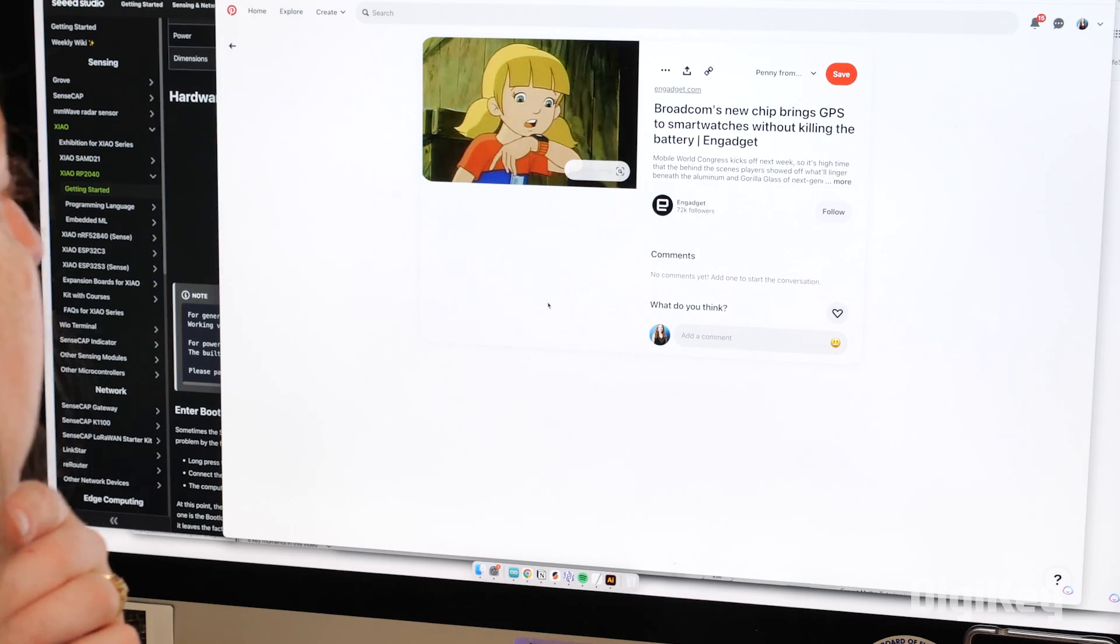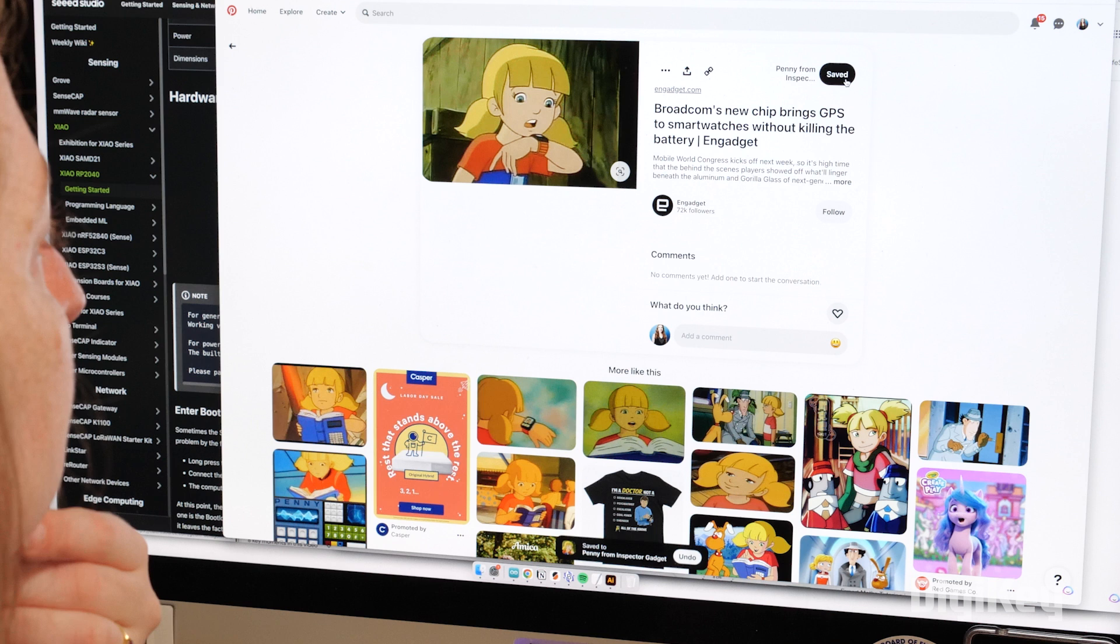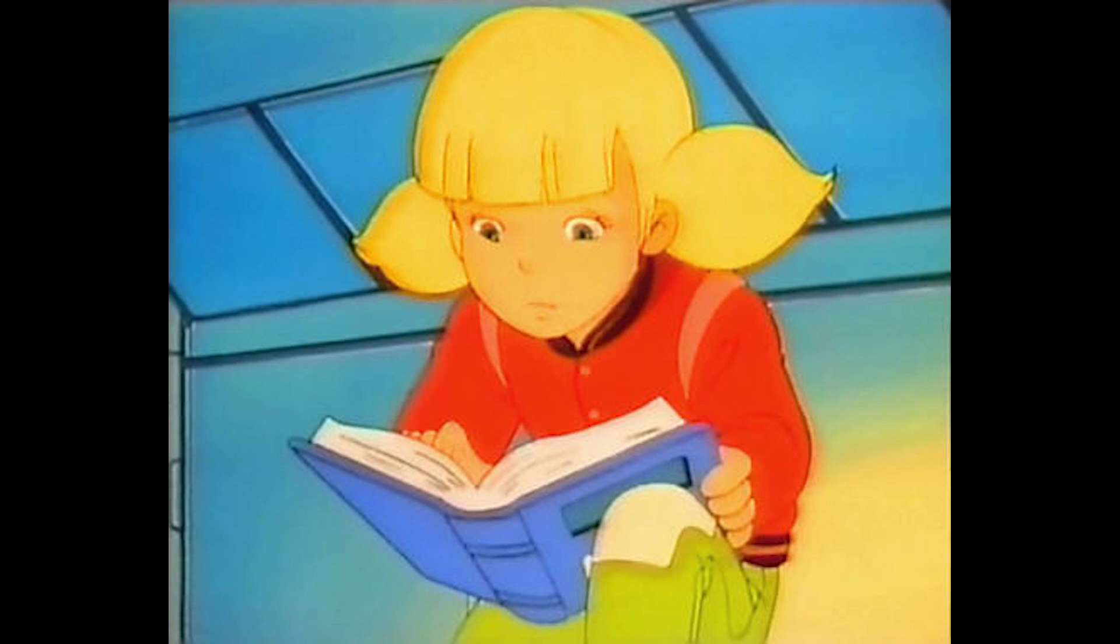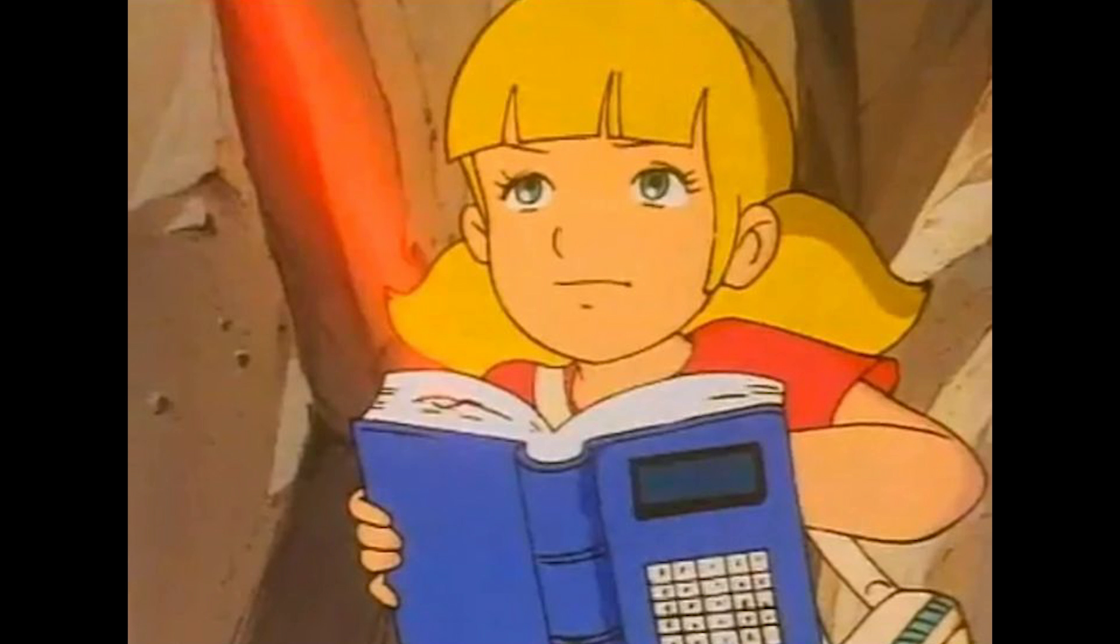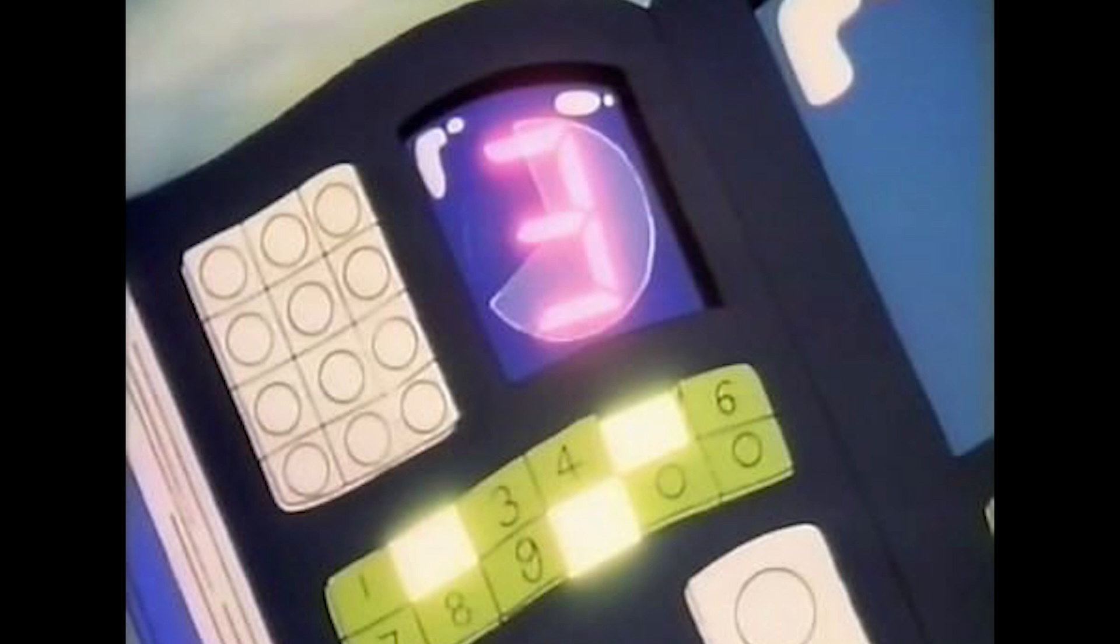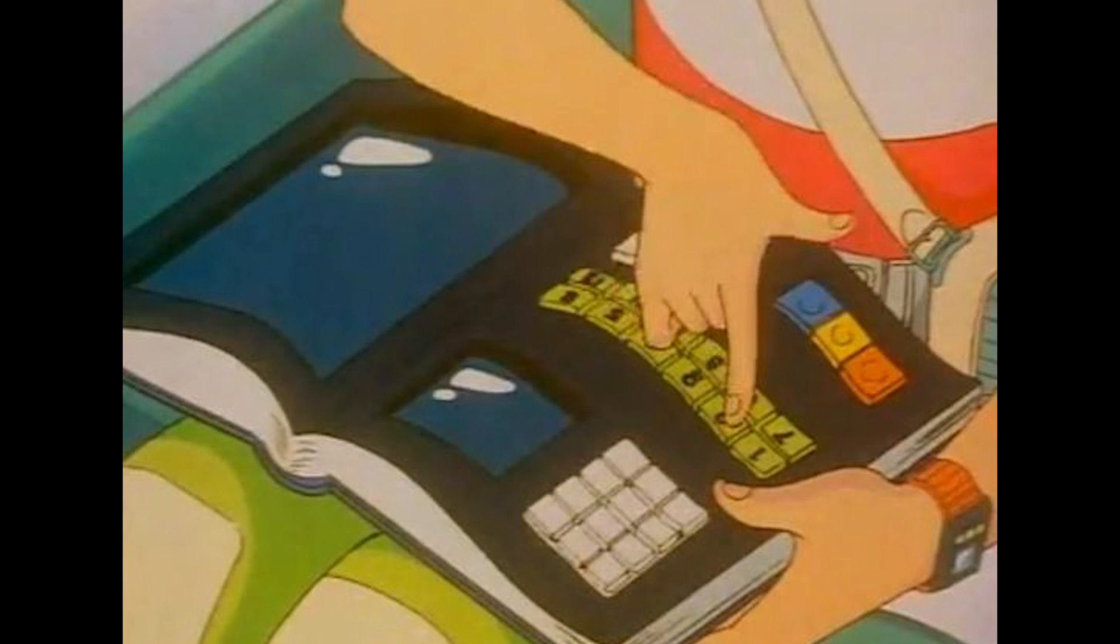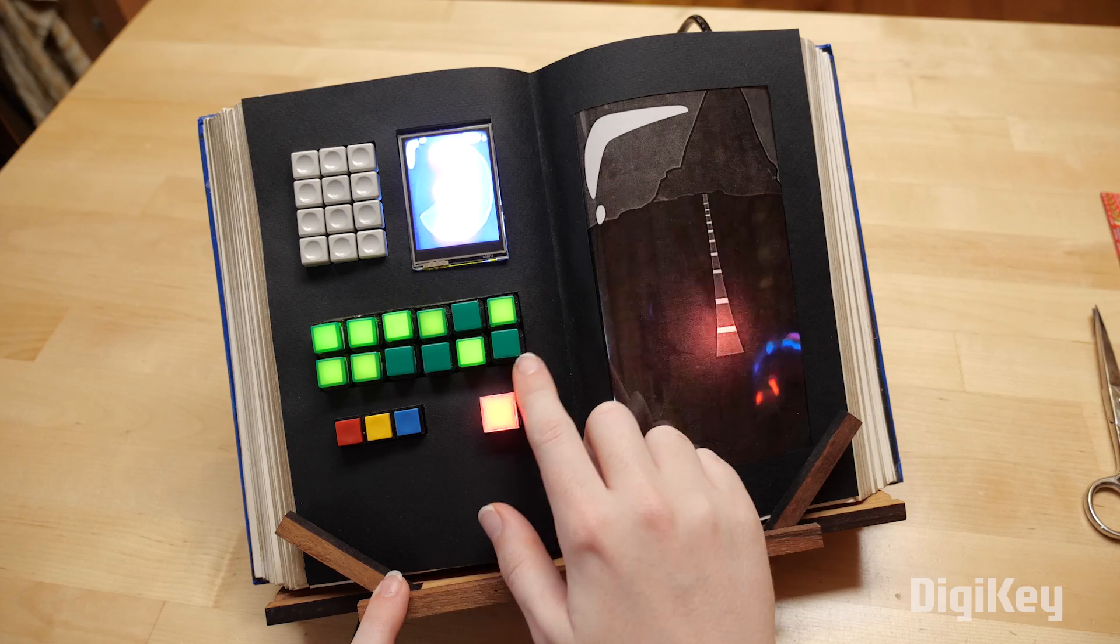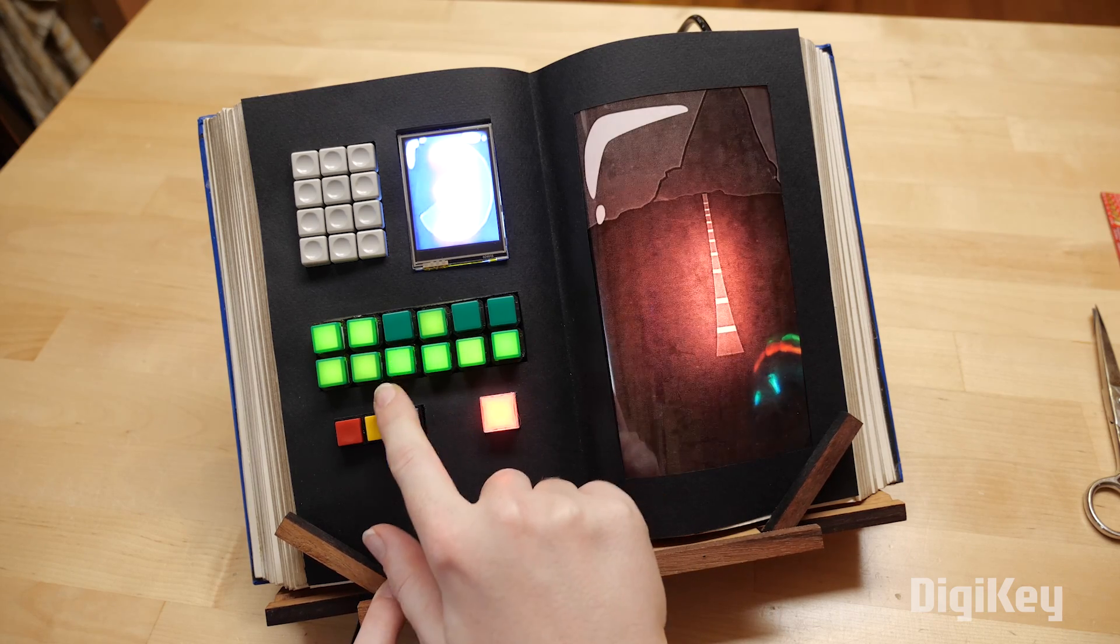The first step to any good prop replica is thorough research. I gathered up a bunch of visuals of Penny's book to inform my bill of materials. It's a relatively thick book with a blue cover, and it's got a small screen and button matrix on the cover, though you never actually see Penny using this feature in the show. On the inside left, there's a 3x4 button panel, a portrait-oriented screen, 12 illuminated green buttons, a white button that lights up red, and three small square buttons, one each red, yellow, and blue. On the inside right, there's a large screen, which I plan to emulate stylistically rather than literally.